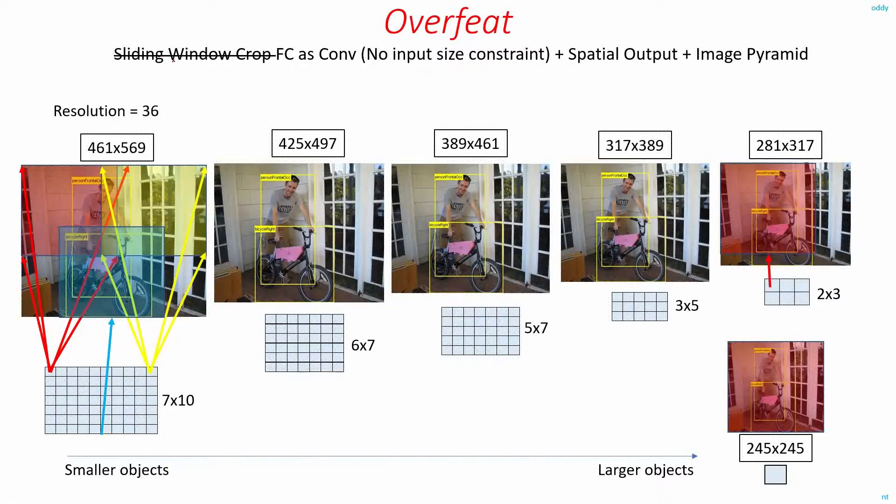In the OverFeat paper, I am avoiding using the sliding window crops by implementing the fully connected layer as convolutions so that there is no input size constraint, and I am getting the spatial output so I am able to use the image pyramid concept.